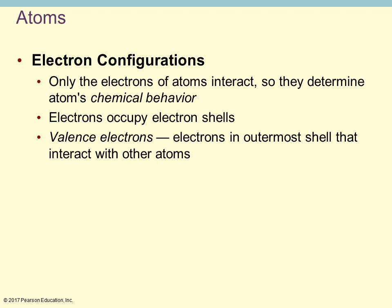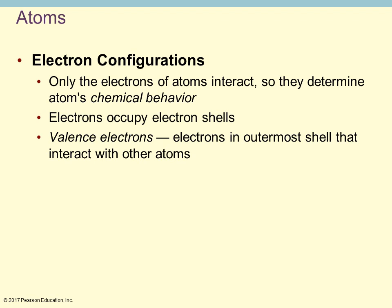Valence electrons refers to the electrons that are in the outermost shell. You may have, say, three different shells, but the valence electrons are only those in the outermost one, because it's the outermost electrons that will be involved with chemical reactions.